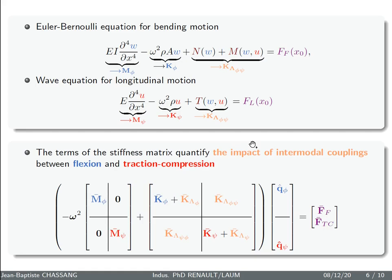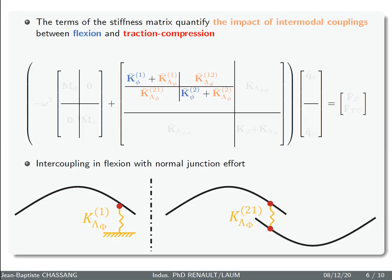So the forces became term of damping and induced stiffness. And you get, finally, the global matrix system here, which quantify the impact of intermodal coupling between flexion and traction compression.